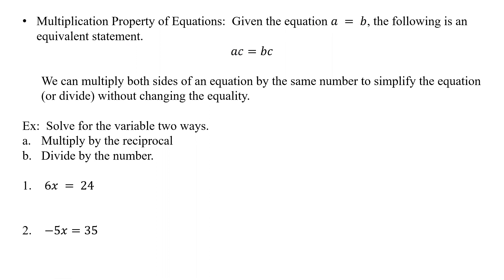We can take and multiply both sides by the same value — multiply by C. So maybe we multiplied by 2 here, so we multiply by 2 here, and it's still equivalent. This says we can multiply both sides of the equation by the same number to simplify, or divide without changing the equation. So we could have A over C equals B over C. We can divide by 2, giving A over 2 equals B over 2. As long as we do it to both sides, we're okay.